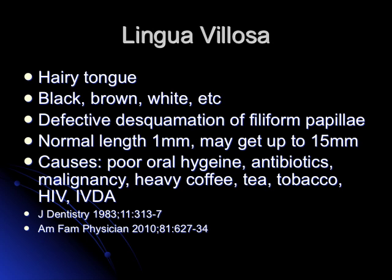A related point about the mouth and mucosa: lingua villosa, or hairy tongue. These patients present with a black or brown tongue due to defective desquamation of the filiform papillae. Normal length is about 1 millimeter, but in these patients it can reach up to 15 millimeters. Causes include poor hygiene, chemotherapy, antibiotics, HIV, coffee, tea, and tobacco. Treatment is oral hygiene, and sometimes topical antifungals may be indicated.